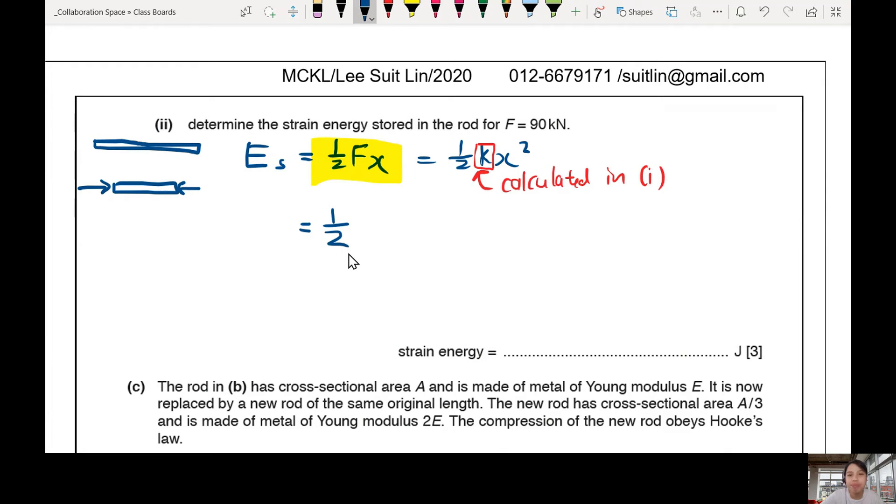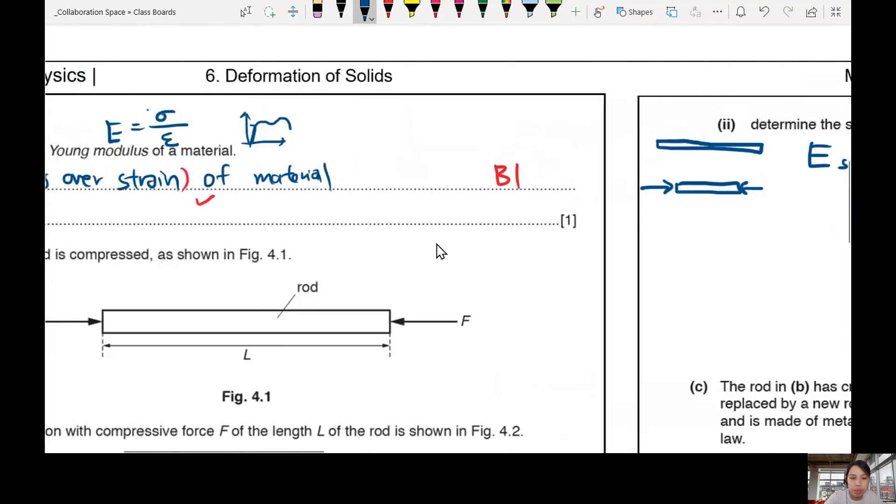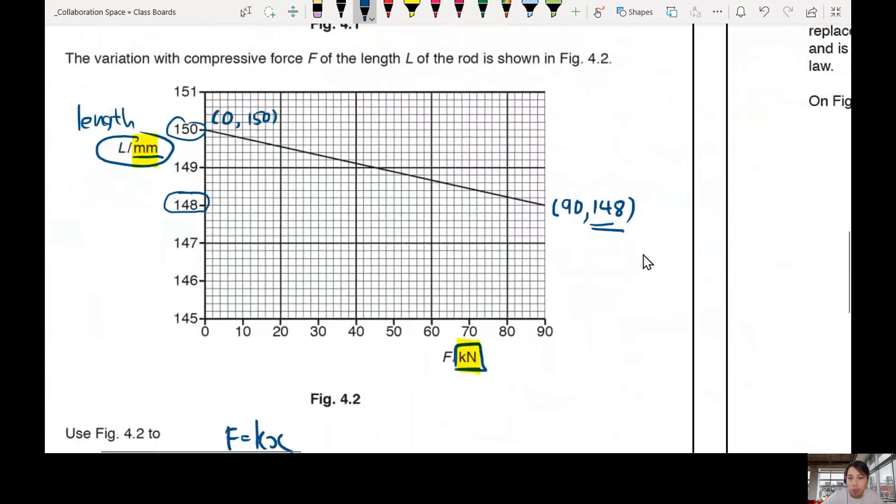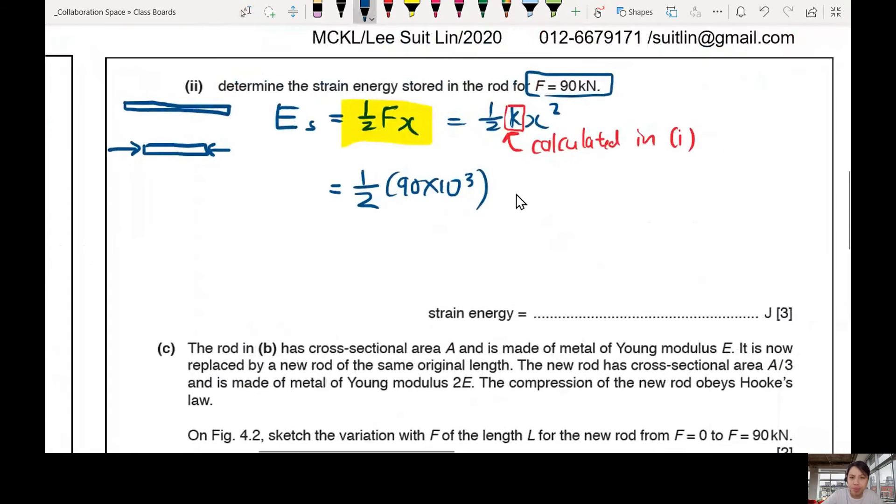So half, I need to choose 90 kilonewton. Given to me, 90 kilo. An extension at 90 kilonewton we already found it. Let's go see the graph again. 148. So we put in 148. Wait, 148 is length. You want the change in length. Extension is the change in length. So we need to take 148 minus 150 again, or 150 minus 148. So we take 150 minus 148 times 10 negative 3. This time it will give us 90 joules.